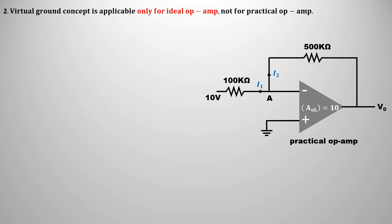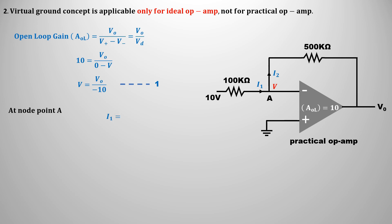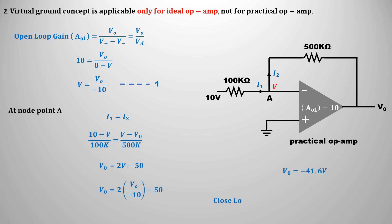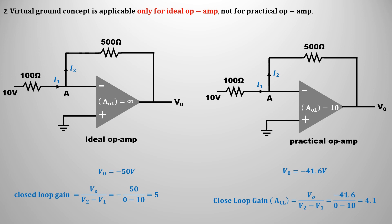Now let's solve for the practical operational amplifier. Since it is practical, we cannot use the virtual ground concept. The open-loop gain is given as 10, and assume the voltage at node point A is V. From the open-loop gain formula, calculate the voltage of node point A in terms of output voltage. Using node analysis, I1 equals I2. Calculating the values of I1 and I2 gives the output voltage in terms of V. Substituting with equation 1 gives an output voltage of -41.6V and a closed-loop gain of 4.1. Comparing both, the practical op-amp has lower voltage gain than the ideal. As the open-loop gain of the practical op-amp increases, the difference decreases, and the practical op-amp behaves like an ideal one at much higher values of open-loop gain.